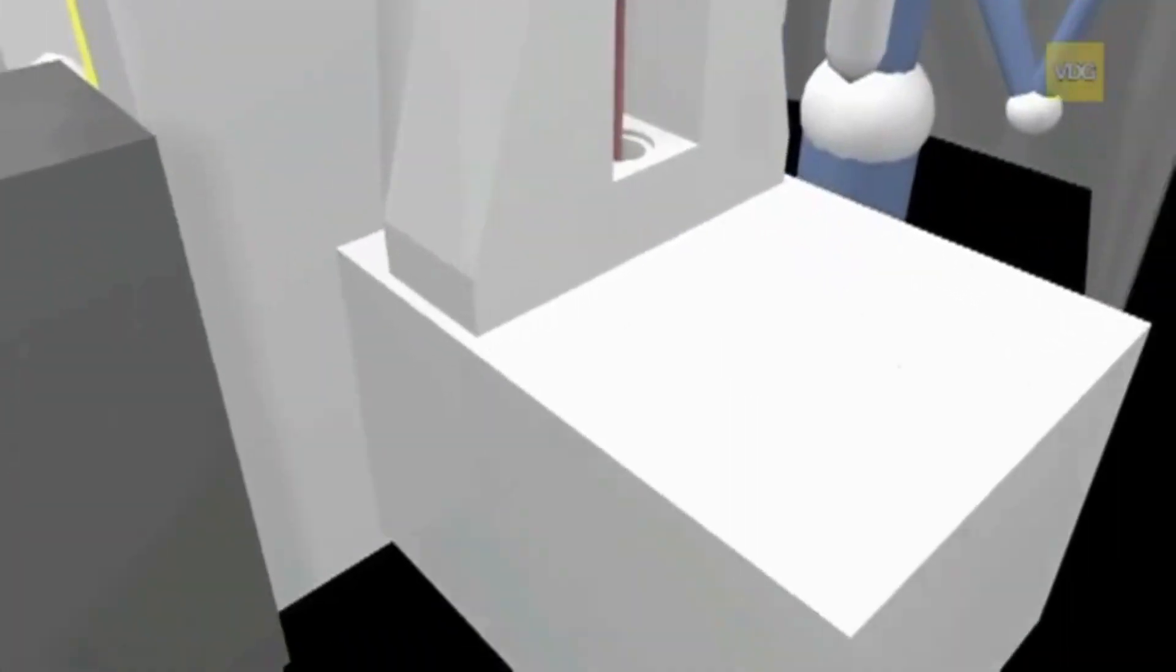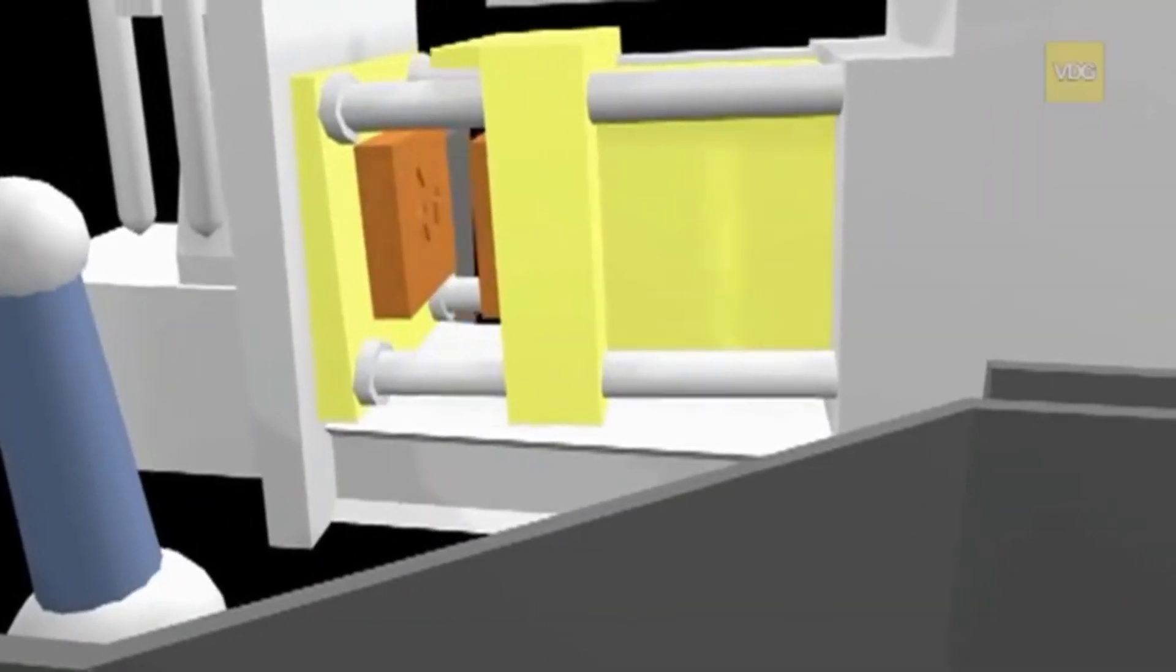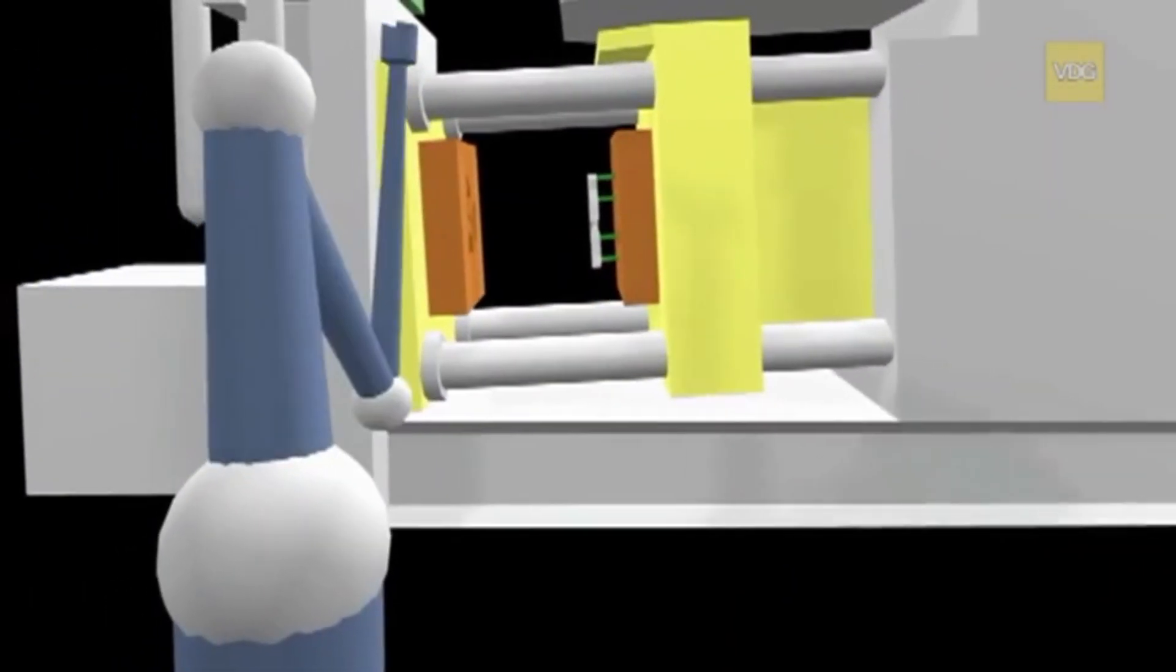The hot-chamber high-pressure die-casting process sequence is illustrated by this animation. A pressing unit, located in the holding furnace, injects the molten metal at a high specific pressure into the die-casting mold, where it solidifies into the casting. Excess molten metal flows back into the furnace, and the machine then opens the mold. Ejectors push the entire casting out of the cavity.